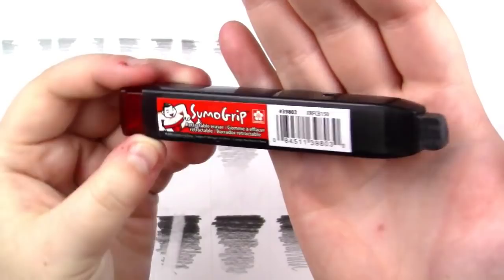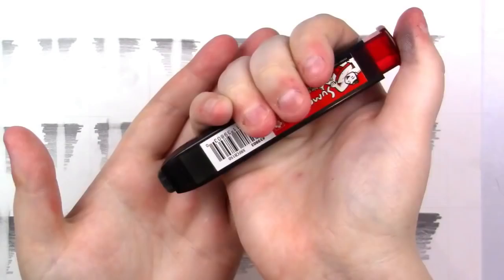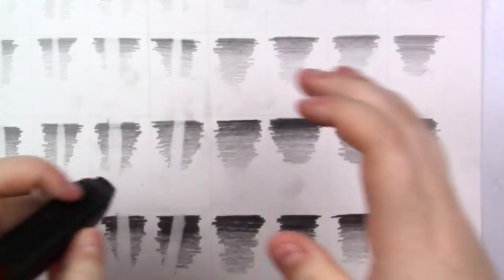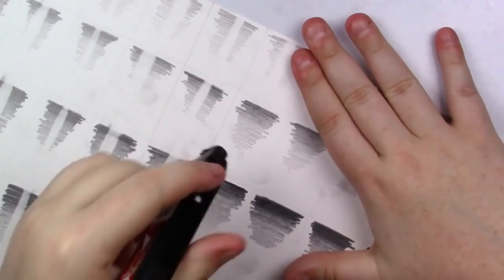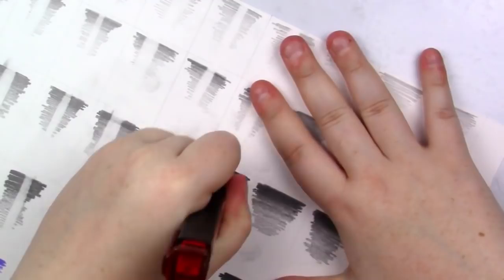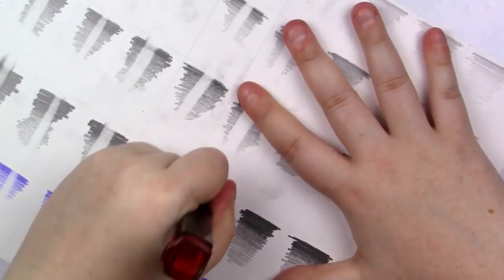Next up is the Sakata Sumo Grip, a retractable eraser, and this one's kind of like a dark horse because you didn't know you wanted it until you got it. This is amazing. This is my new favorite eraser, and you're going to see why in just a moment. It takes on every one of these pencils and doesn't even think about it. It just erases so beautifully. I'm giving this one an A+. It does a really good job. The only bad part about this is it has a lot of shavings, eraser shavings, but it's good for detail and stuff too, which is always nice.